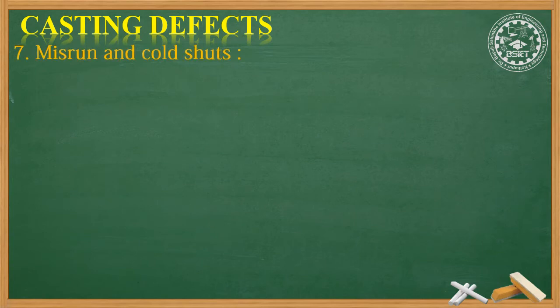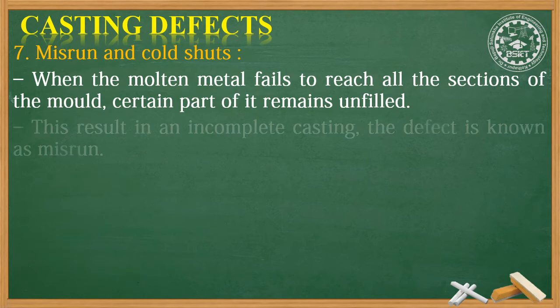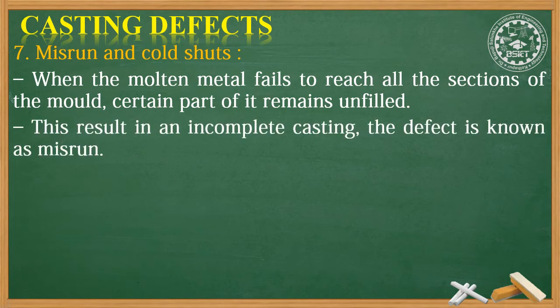Number seven is misrun and cold shuts. When the molten metal fails to reach all the sections of the mold, certain parts of it remain unfilled. This results in an incomplete casting, and this defect is known as misrun.